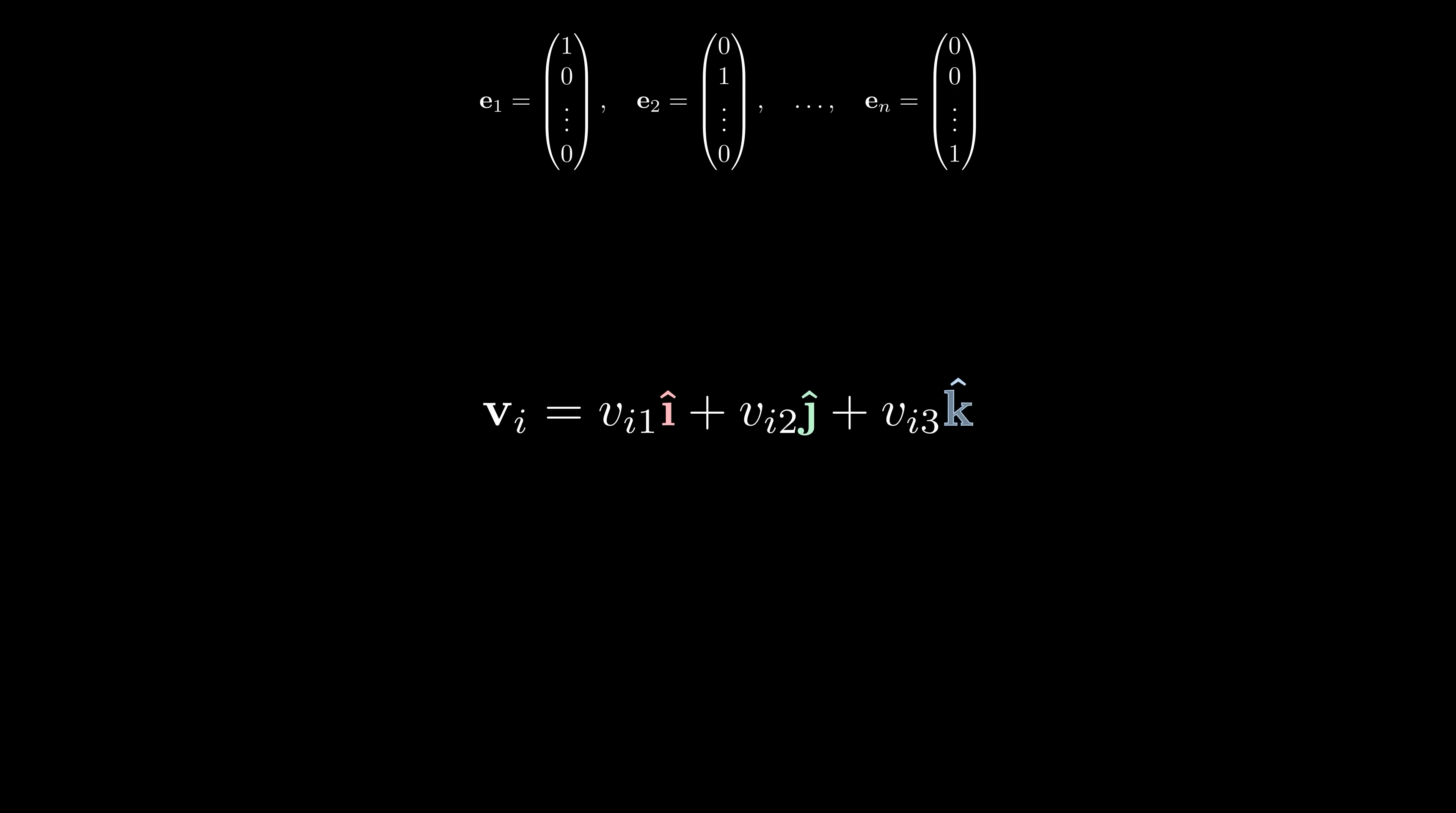Using this new notation, the coordinate representation of a 3 dimensional vector now looks like this. Similarly, we have the representation of an n dimensional vector, and we'll often use a summation sign to write it in a more compact form.